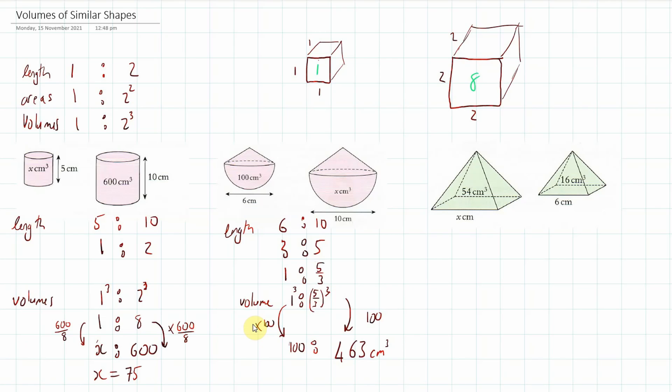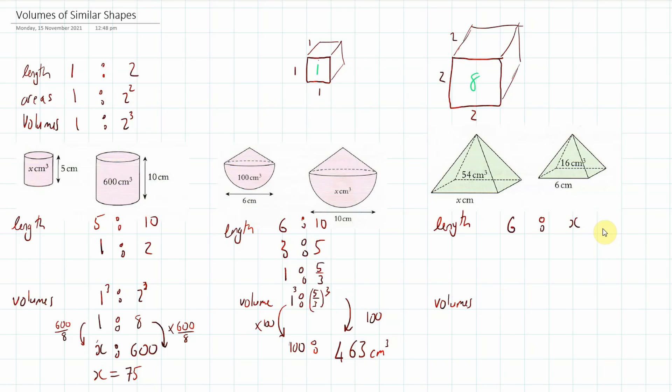Now, this time in the third one, we are working backwards, because we don't know the length ratio. So, length ratio, we've got 6, which is the smaller pyramid, to x. And we know that the ratio of the volumes is 16 to 54. Which is 1 to, now what is that? 54 divided by 16 is 27 over 8. Now, if we cube root those, we'll get the ratio of the length.